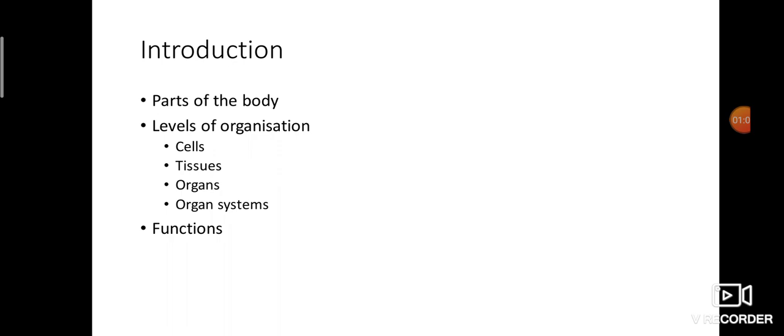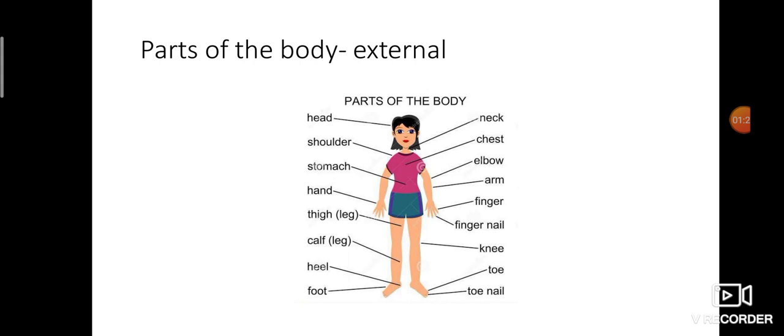In detail we are going to see about these terms, and at last we are going to see the functions of cells, tissues, organs, and organ systems. There are so many different types of cells, different types of tissues, and so many organs — both internal and external — in our body. Now, parts of the body: from your lower classes you have been studying parts of the body. Now we are going to separate them into external and internal. The term 'external' means the exterior — parts which can be seen with our eyes.